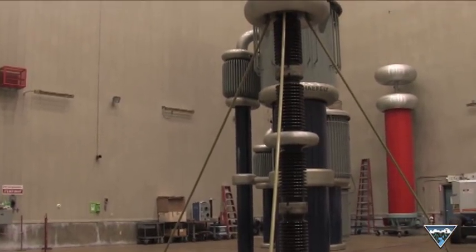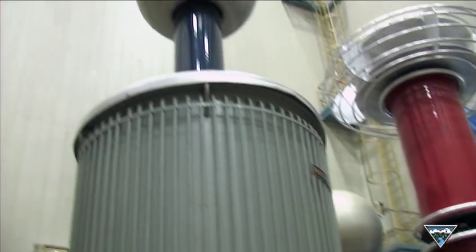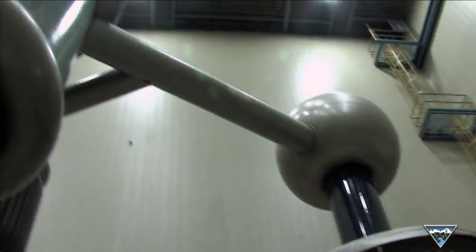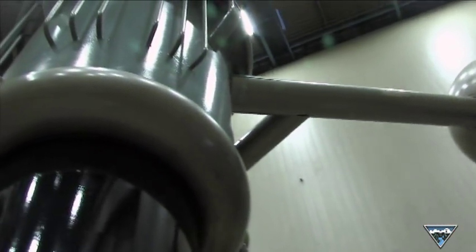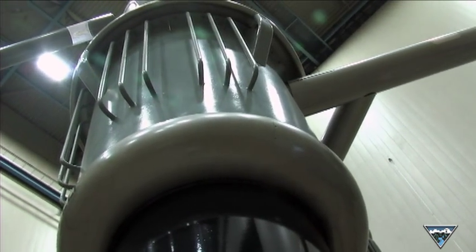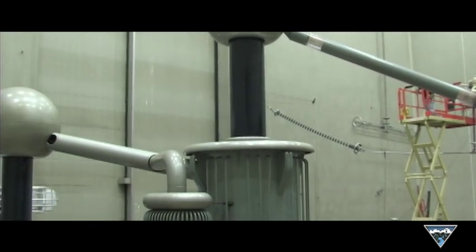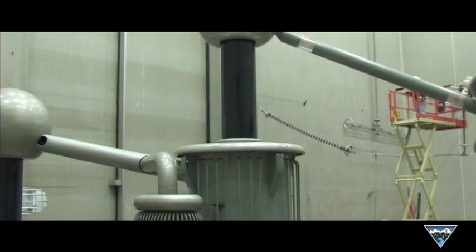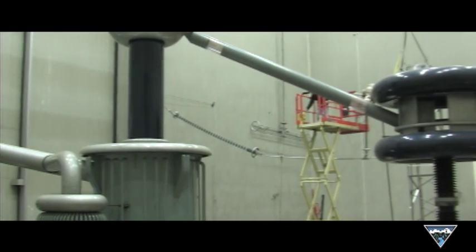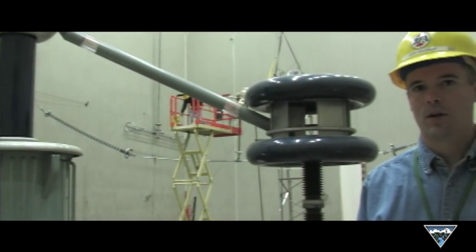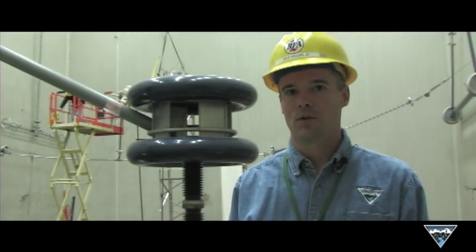Basically, the purpose of the high voltage lab is to make sure that we keep the power on the power lines. With the Cascade Transformer, we can produce 1.1 million volts, and we use that to test things like insulators, hot sticks, transformers, capacitors, bushings, to make sure that they can withstand those higher voltages.